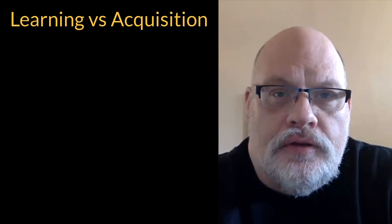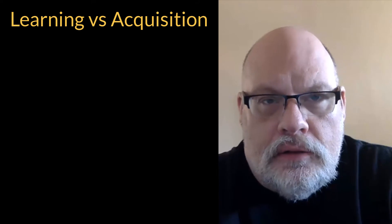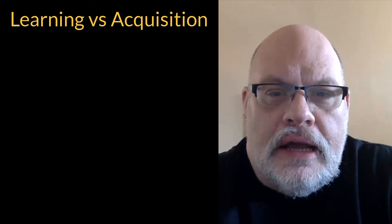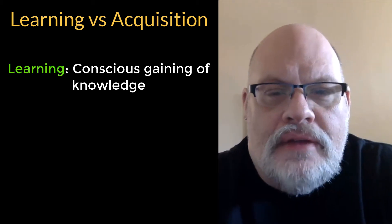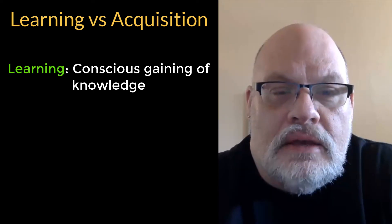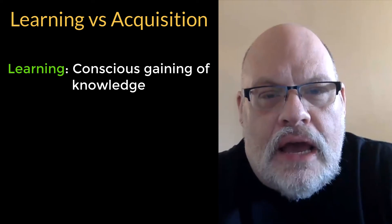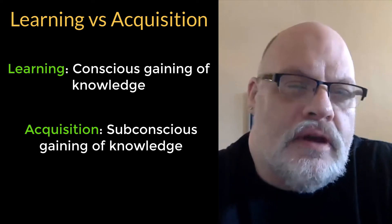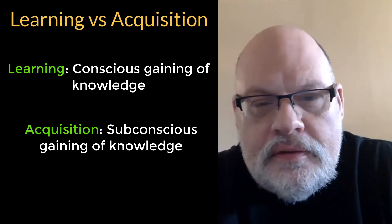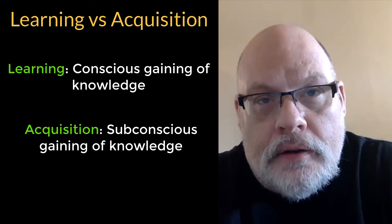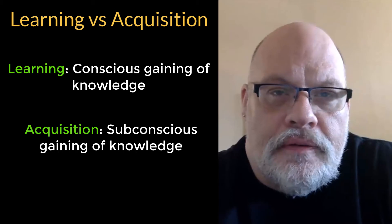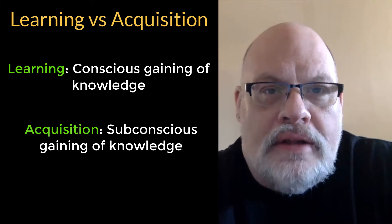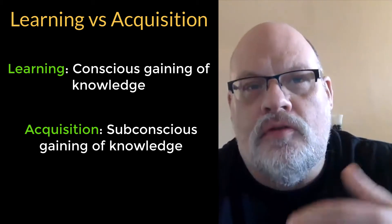Before we delve into the issue of universal grammar, I do want to make one little terminological distinction. I want to talk about the difference between learning and acquisition. Learning is where you gain some kind of knowledge using conscious means. Acquisition is where you gain some kind of knowledge using subconscious means. For example, chemistry, linguistics, and physics are things you learn. But the evidence seems to suggest that languages are best acquired rather than learned. Other examples of things that you might acquire might be walking or learning to dance — you don't consciously think about them, you just do them.